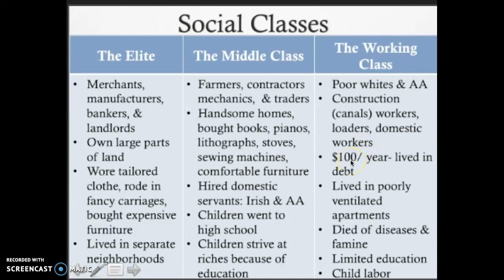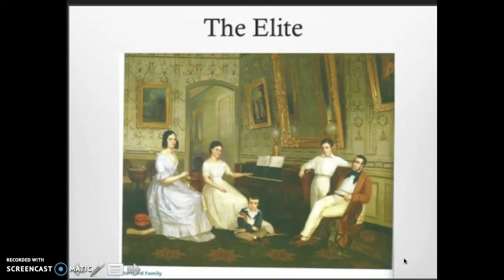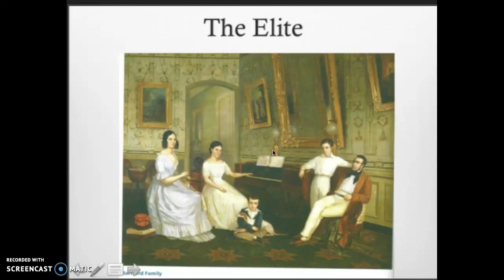Finally, the working class consisted of poor whites and predominantly African Americans. They worked as construction workers on canals, loaders who loaded cargo to be shipped, and domestic servants in people's homes. Their annual income was about $100 a year — equivalent to about $3,000 today — and as such they lived in debt and poorly ventilated, rat-infested apartments, particularly in New York. Diseases were very common and many died from disease and famine. Their children had limited education because by age 10 many parents sent their children to work. Here is a picture of an 1840s elite family with pianos, well-dressed children, huge mirrors, and lithographs in a large home.